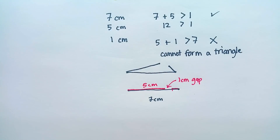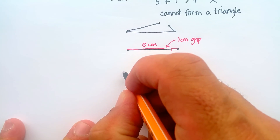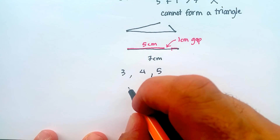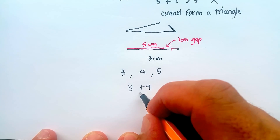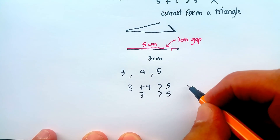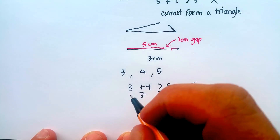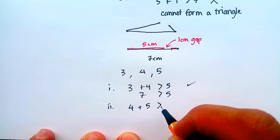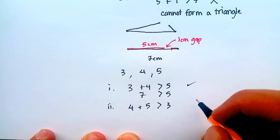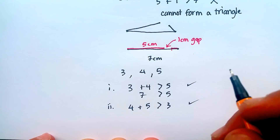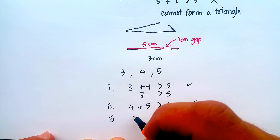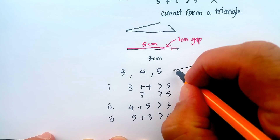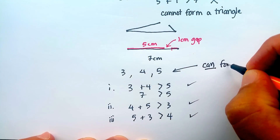Let's try another one to see if it works. Let's do line segments of three, four, and five. We know that three plus four is seven — is that greater than the third segment, five? Yes. Let's try another combination: four plus five equals nine — is that greater than three? Yes. And finally, five plus three equals eight — is that greater than four? Yes. So these three line segments can form a triangle.